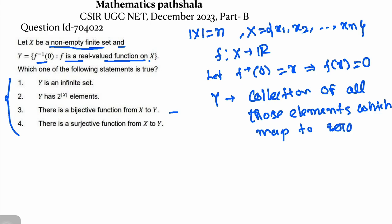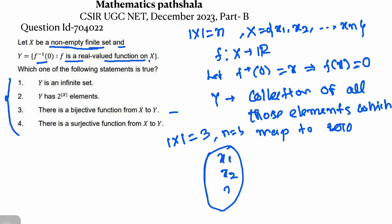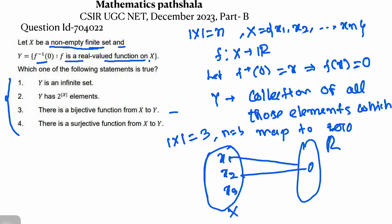For simplicity, let the cardinality of X equal 3, that means n = 3. So the set X = {x₁, x₂, x₃}, and this is the set of real numbers. We have to define the function in such a way that it takes elements from X to 0.